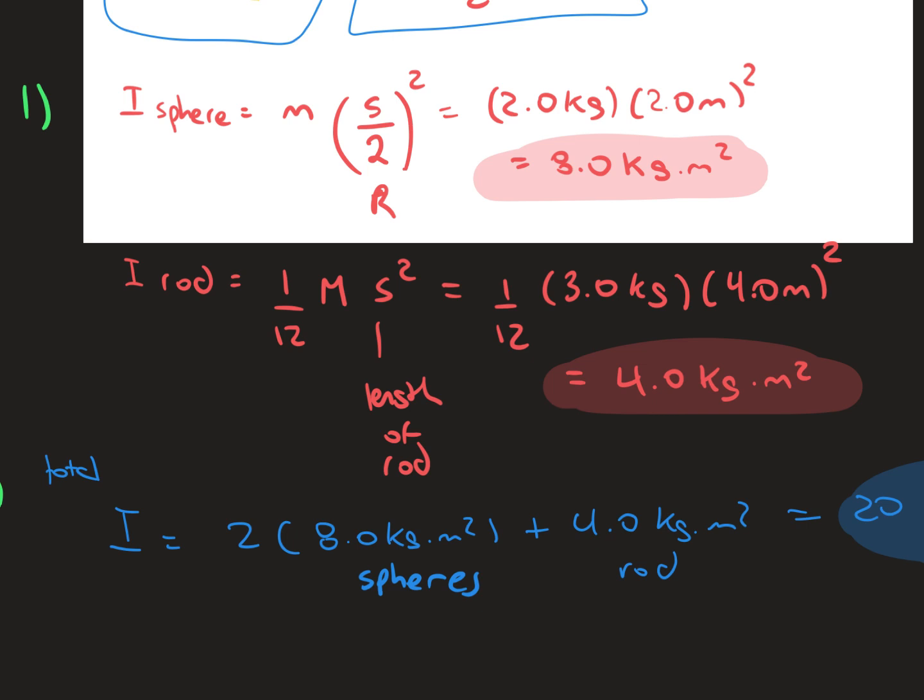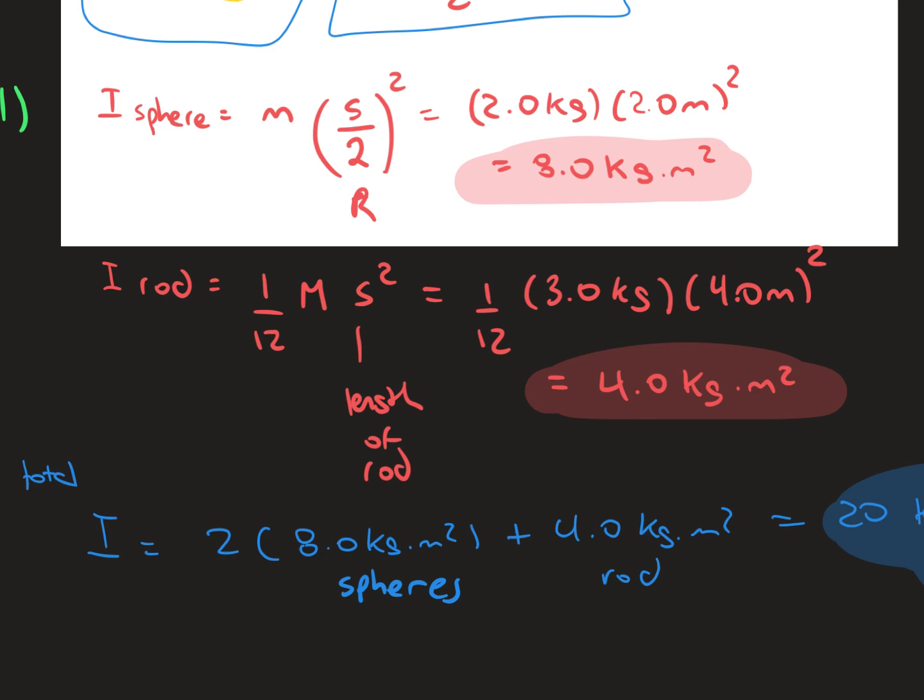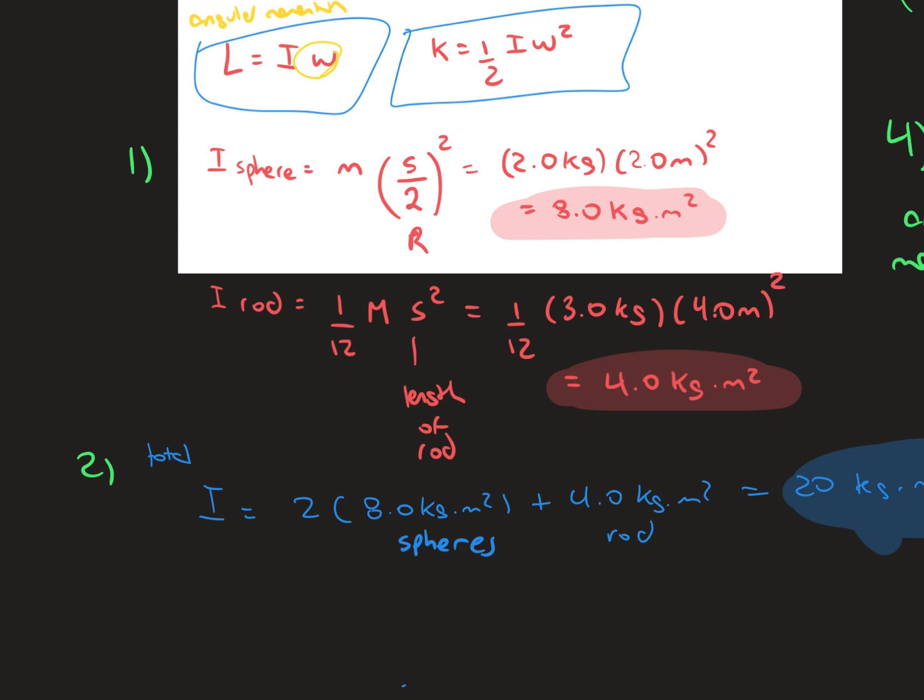For the moment of inertia of the rod, we use the formula that is on the last page of the worksheet: 1 over 12 times the mass times the length of the rod squared. That gives us 4 kilograms meter squared.